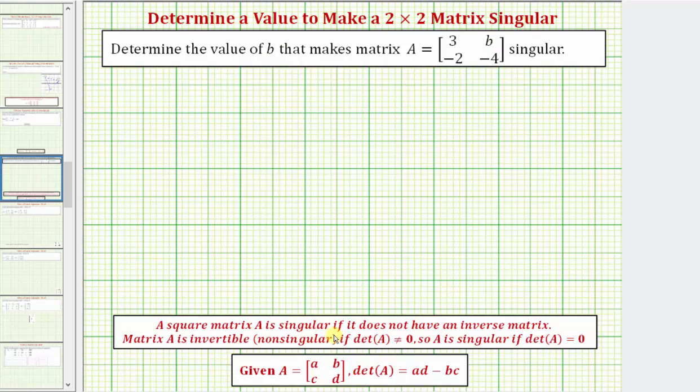A square matrix A is singular if it does not have an inverse matrix. We learned earlier that a matrix A does have an inverse or is invertible if the determinant of matrix A does not equal zero. So it follows that if matrix A is singular, then the determinant would have to be equal to zero.